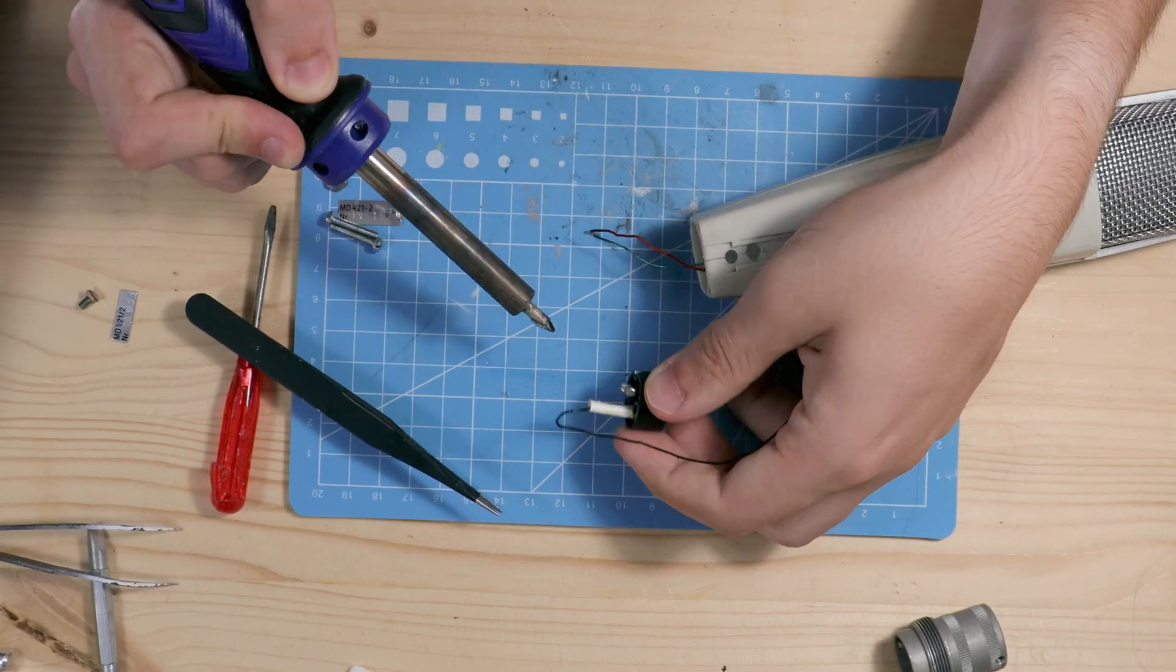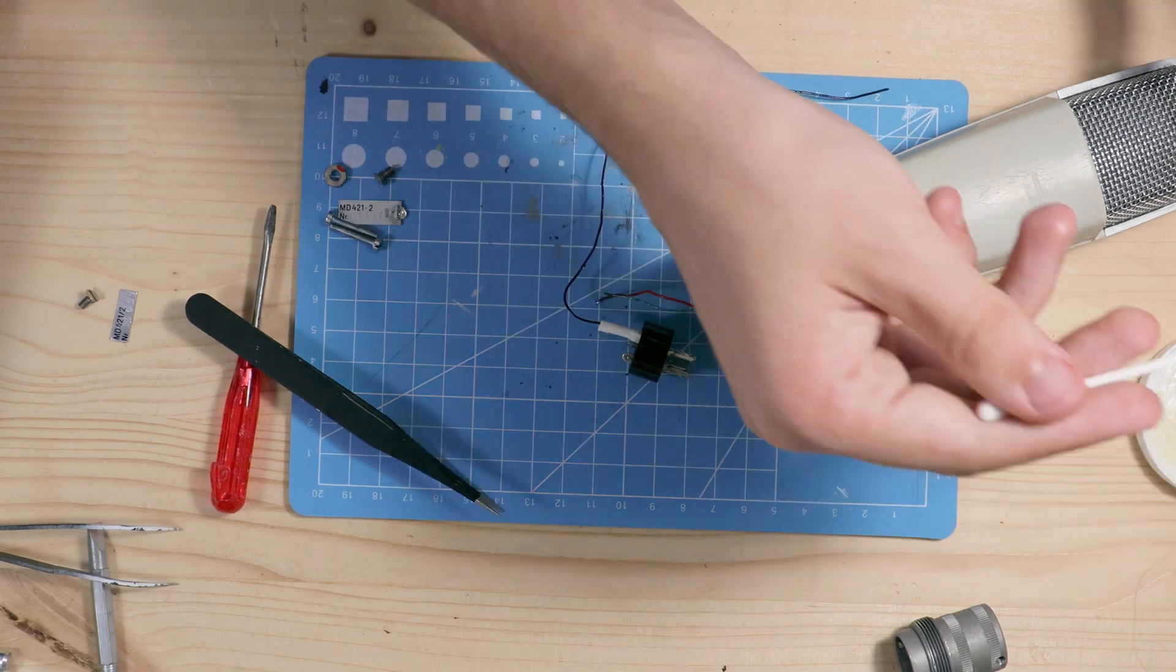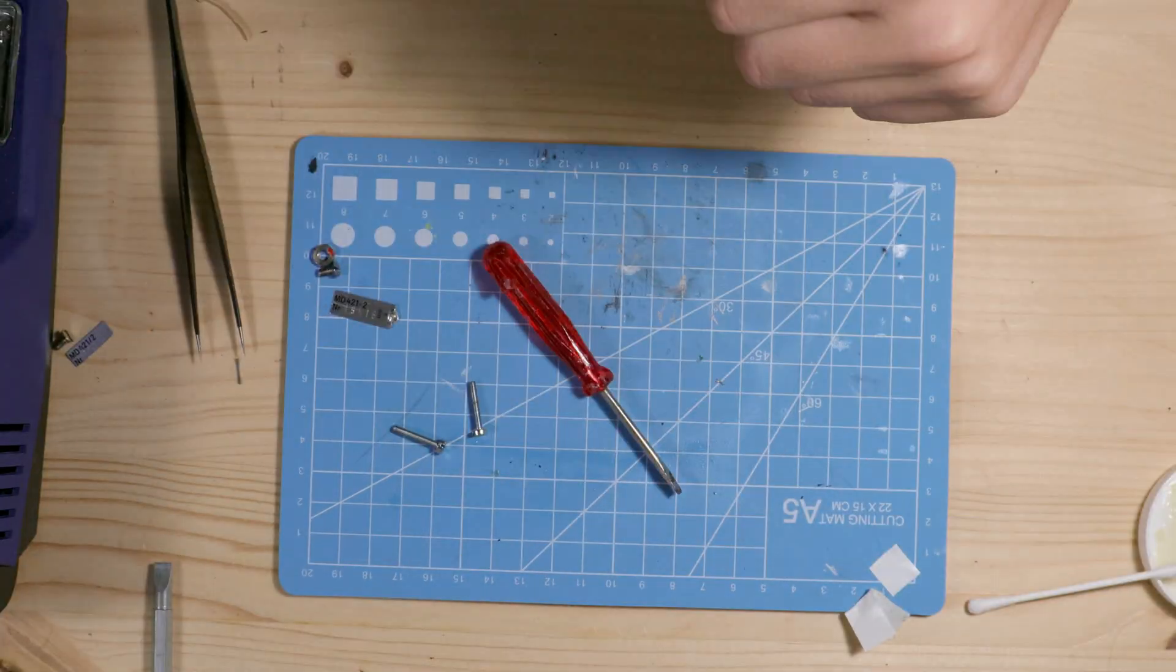Now, we just have to put it back together. First, we have to solder the wires back to the connector, as they were the reason this microphone wasn't functioning anymore. After that is done, we just do the disassembling, but backwards.